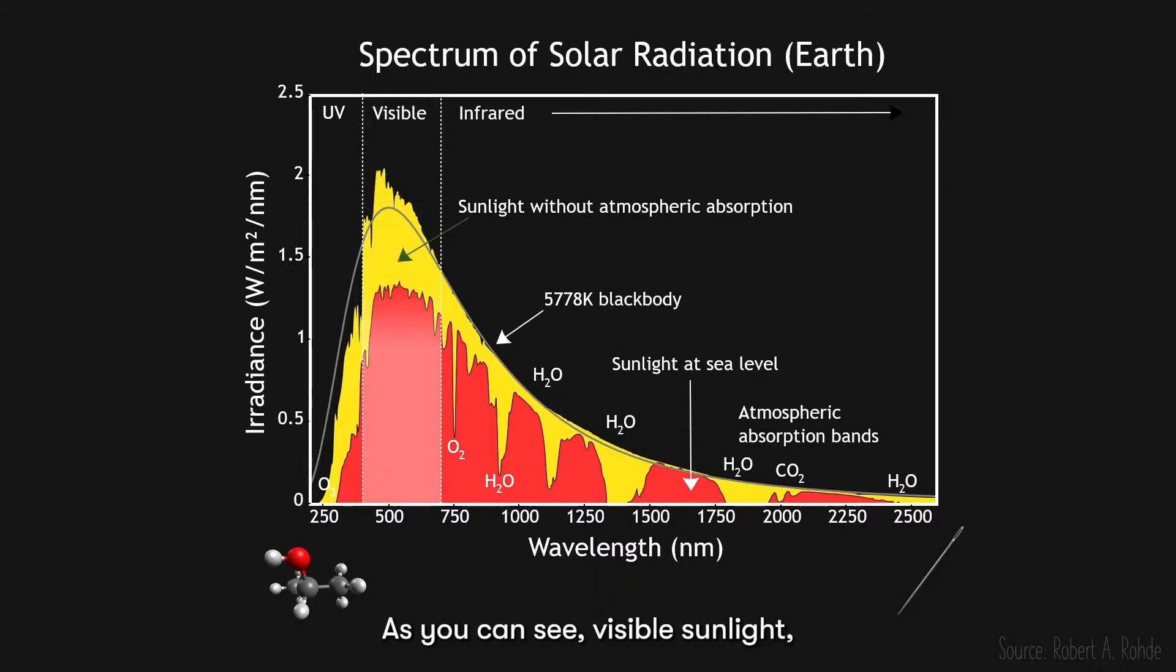As you can see, visible sunlight, or the colors of the rainbow, has the most intensity, which means for a solar cell, most of the sunlight converted into electricity comes from visible sunlight.